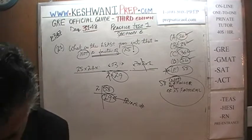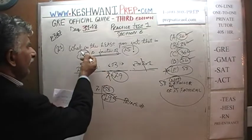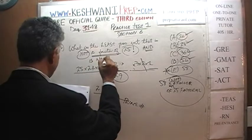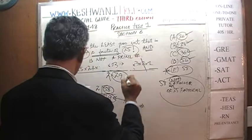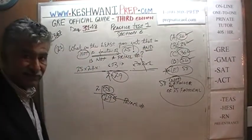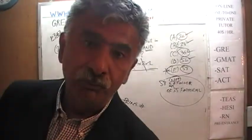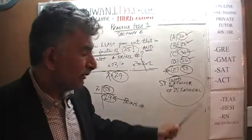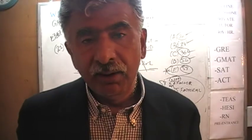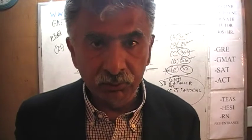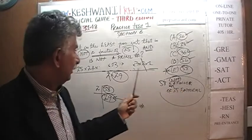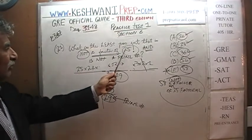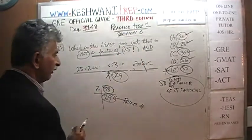One last thing I want to mention: the book actually says what is the least positive integer that is not a factor of 25 factorial and is not a prime number. That's the part I left out. As you can see, 58 is not a prime number because 58 can be divided by 2. Without that qualification, if they had simply said what is the least positive integer that is not a factor of 25 factorial, the answer would have been 29.